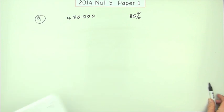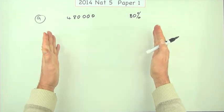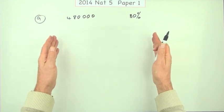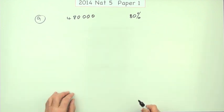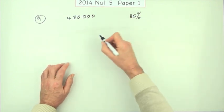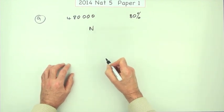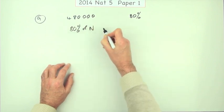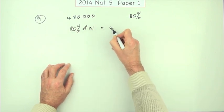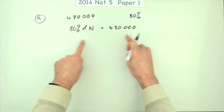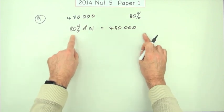So how many were available? There are two ways you could do it: by proportion, or by solving the equation. If you do it by proportion, we use n to stand for the number of tickets. What this says is: 80% of n was 480,000.